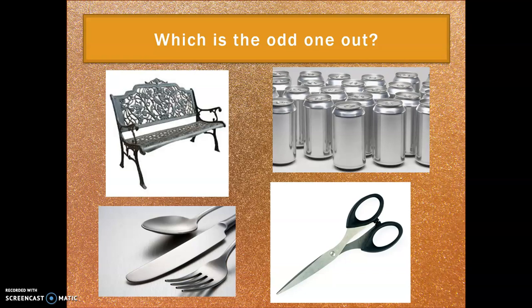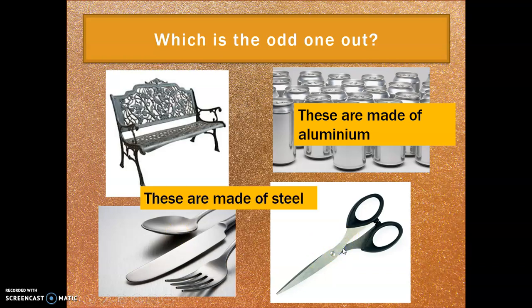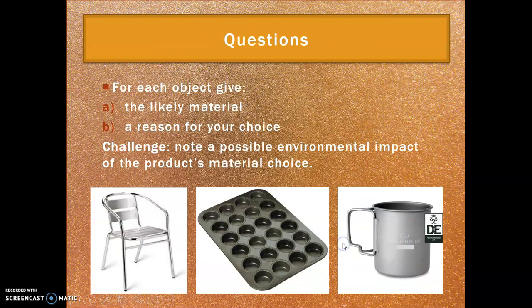Let's get to some questions. Here's an easy one to start: which is the odd one out? Pause the video, have a think. The answer is the cans, which are made of aluminium, whereas the bench, cutlery, and scissors are made of steel. Now for the main questions: for each item, think about the material and give a reason for your choice. Have a go at the challenge too if you wish — pause the video and then we'll go through the answers.